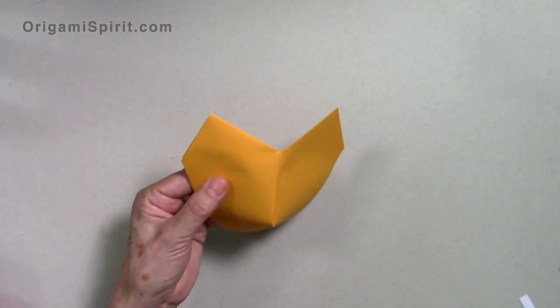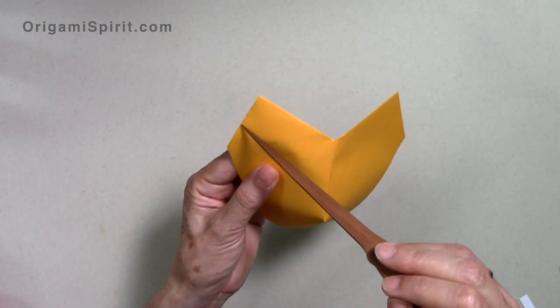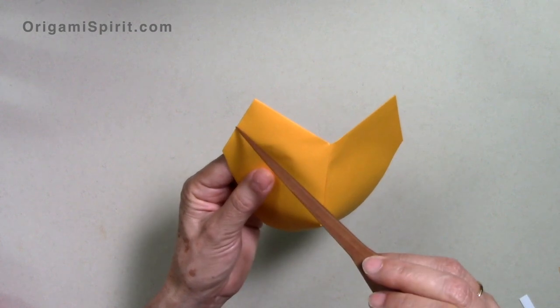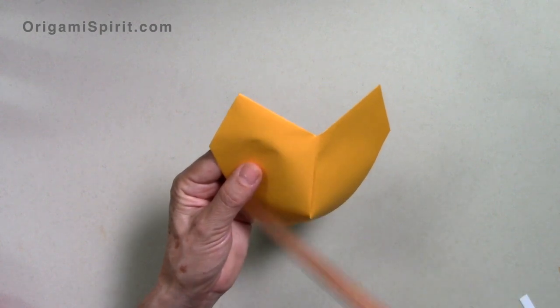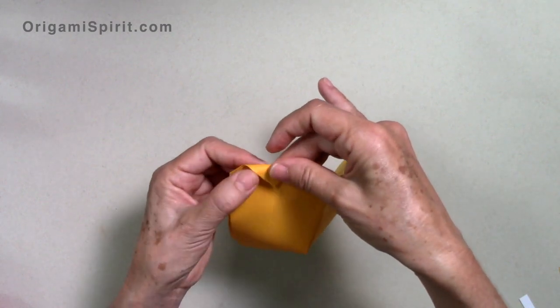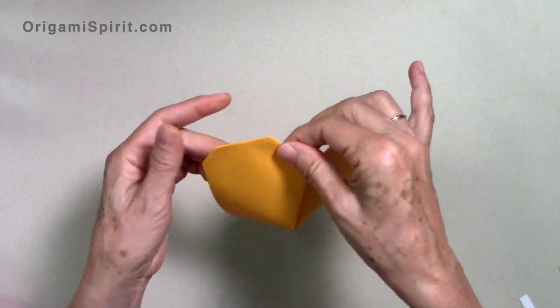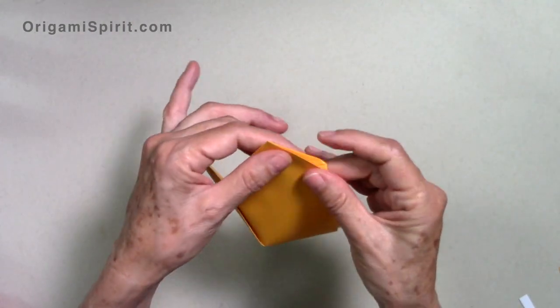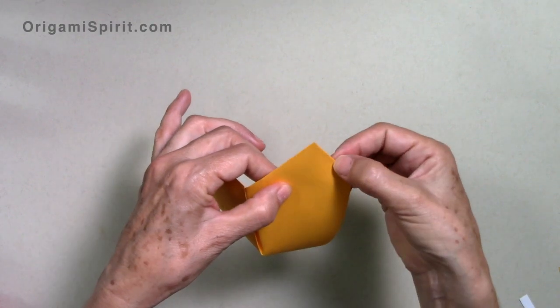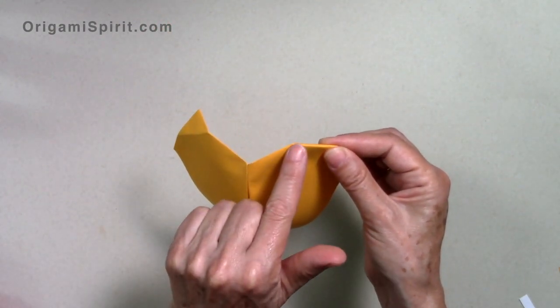Now, we are going to blunt these corners here. We determine the midpoint of this distance, and about there. This is going to be a universal fold, because we fold to the front and we fold to the back. Make sure that this distance equals this distance.